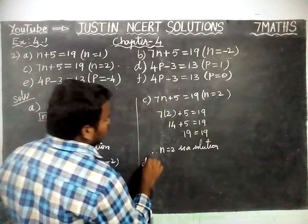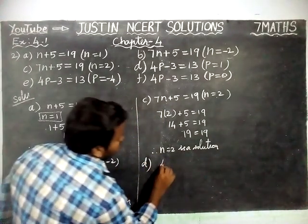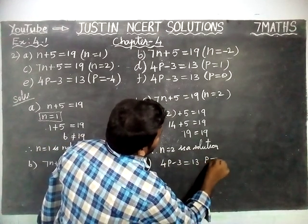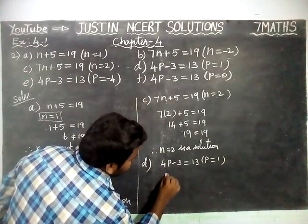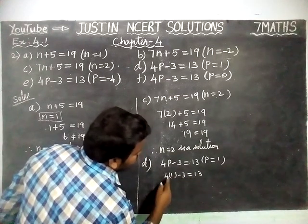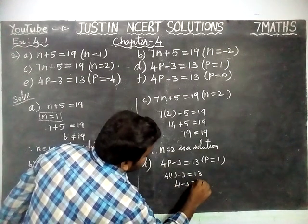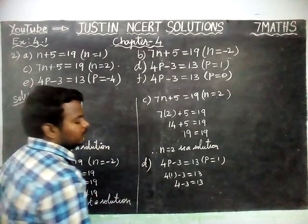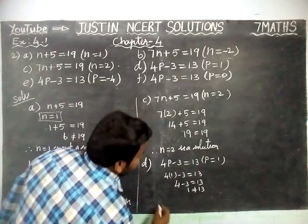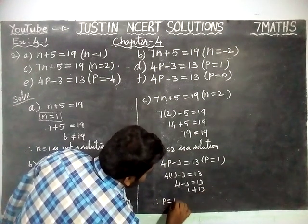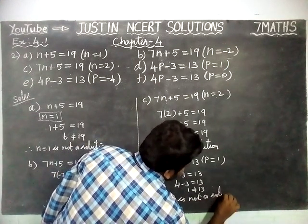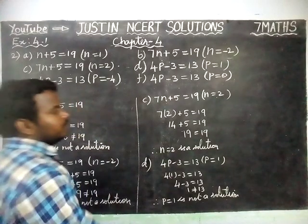Next, we are going to solve part D: 4P minus 3 is equal to 13, where P is equal to 1. Substituting: 4 into 1 minus 3 is equal to 13. 4 into 1 is 4, minus 3 — the signs are different, so we find the difference: 4 minus 3 is equal to 1. 1 is not equal to 13. Therefore, P equal to 1 is not a solution.